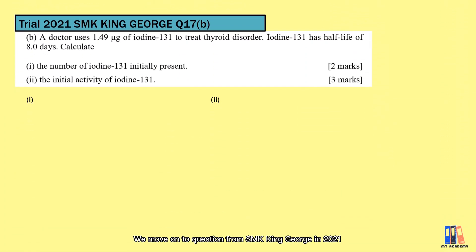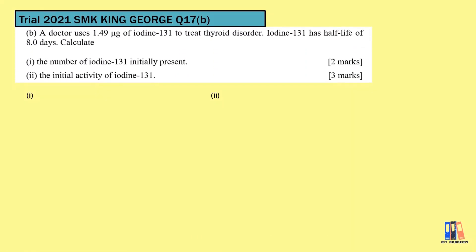We move on to the question from SMK King George in 2021. A doctor used 1.49 microgram of iodine-131 to treat thyroid disorder, and it has half-life of 8 days. We need to find out the initial number of iodine atoms.